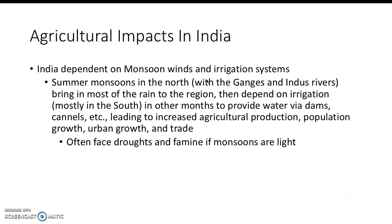Looking at agricultural impacts within India: India is dependent on monsoon rains — several weeks if not months during a certain time of year of consistent rainfall, which feeds the water systems. About six months of the year India deals with heavy rains, while the other half is very dry. They work with summer monsoons through the Ganges and Indus rivers, which become very heavy, and then depend on irrigation in the south — dams and canals — to bring enough water to support agricultural production throughout the rest of the subcontinent.